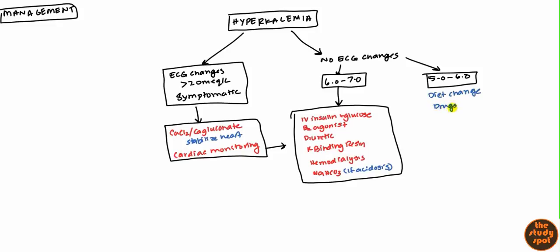If they're taking drugs causing the hyperkalemia, you can try to stop the drug. However, with ACE inhibitors and ARBs, especially in patients who are diabetic or have kidney disease, these medications are so helpful that you want to try to keep them on it if possible. You can give a lower dosage or add a diuretic to help remove some potassium. You can also consider giving albuterol, one of the beta-2 agonists. This wraps up our discussion on hyperkalemia — hope you learned a lot and I'll see you in a future video.